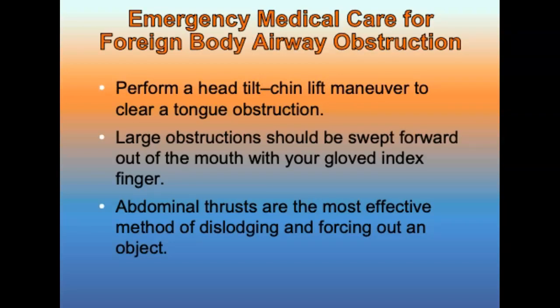Emergency management for foreign body obstruction: perform a head tilt-chin lift maneuver to clear the tongue; if spinal trauma is suspected, use the jaw thrust maneuver. Large pieces of vomited food, mucus, loose dentures, or blood clots should be swept forward and out of the mouth with a gloved finger. When available, perform suctioning to maintain a clear airway. Abdominal thrusts are the most effective method of dislodging and forcing an object out of the airway of a conscious patient — residual air always present in the lungs is compressed upward to expel the object.